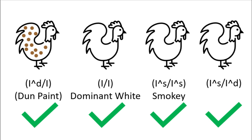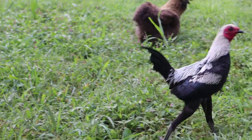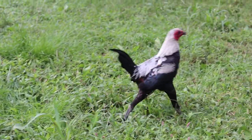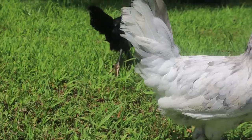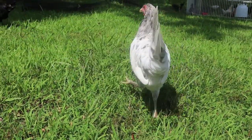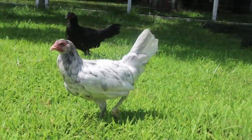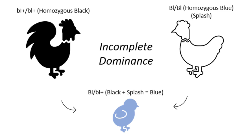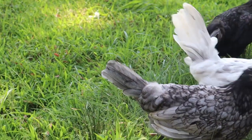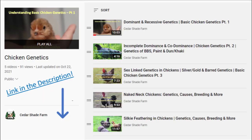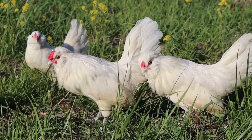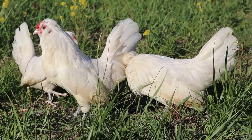Before we go on, I'd like to clarify that I will not be talking about silver, which inhibits gold and turns phaeomelanin white, or the splash variety, which is homozygous blue. Although homozygous blue may appear white, it is caused by the blue gene, and when a splash is bred to black it results in heterozygous blue, which looks nothing like splash. I do have a video on the blue gene and another on silver and sex-linked genetics, both linked in the description.